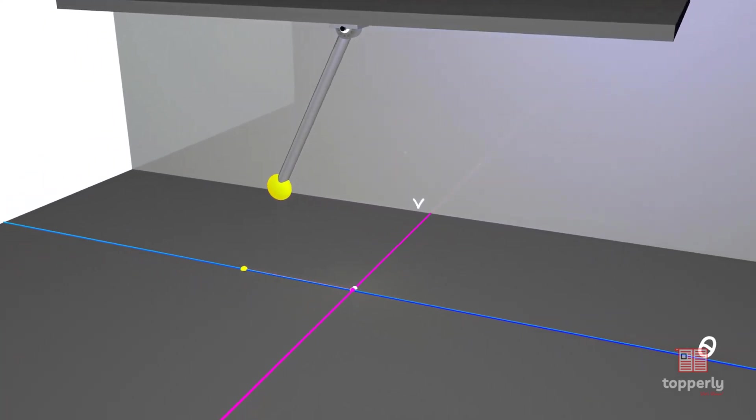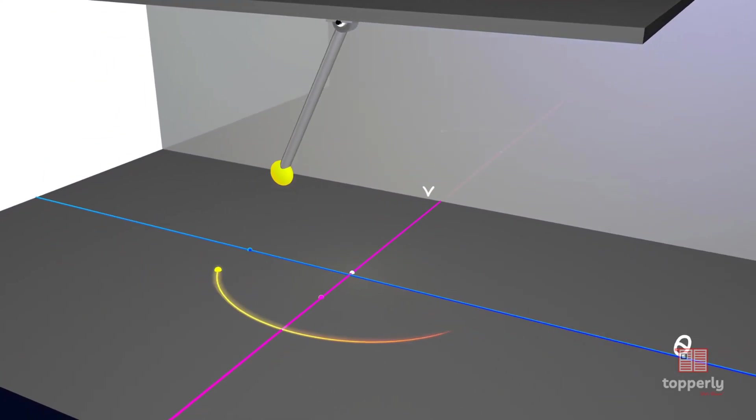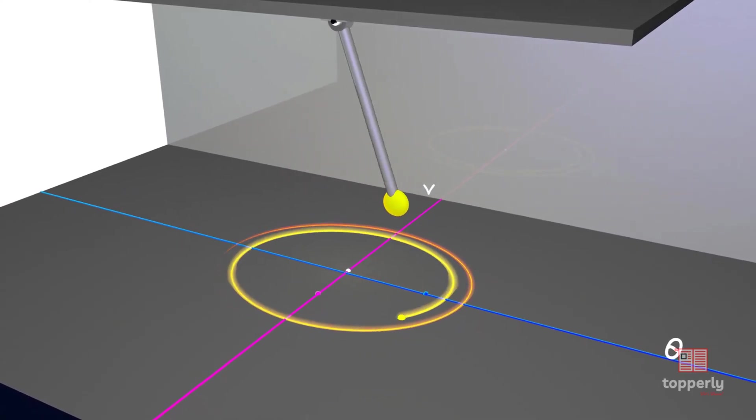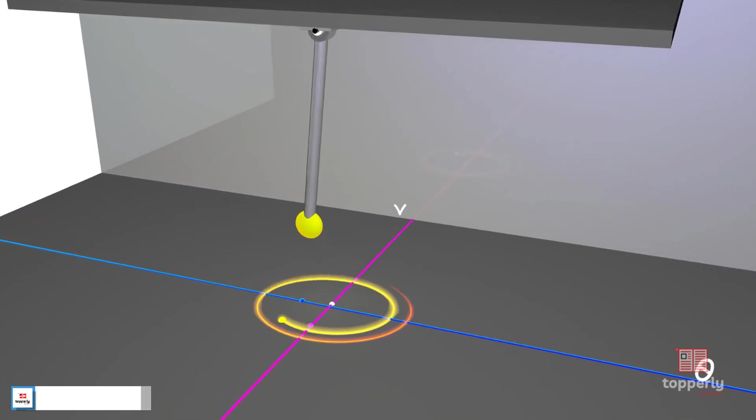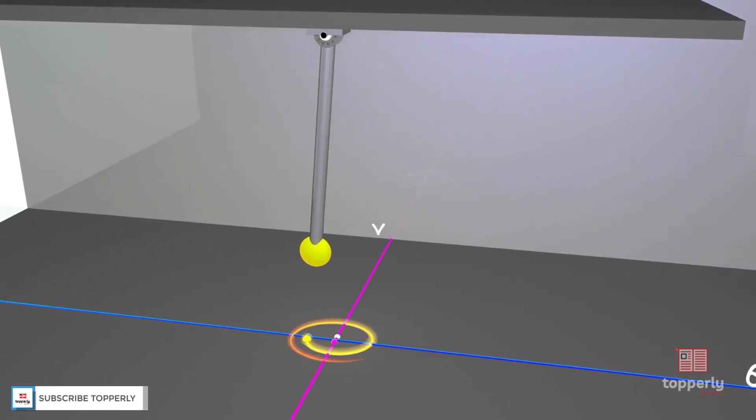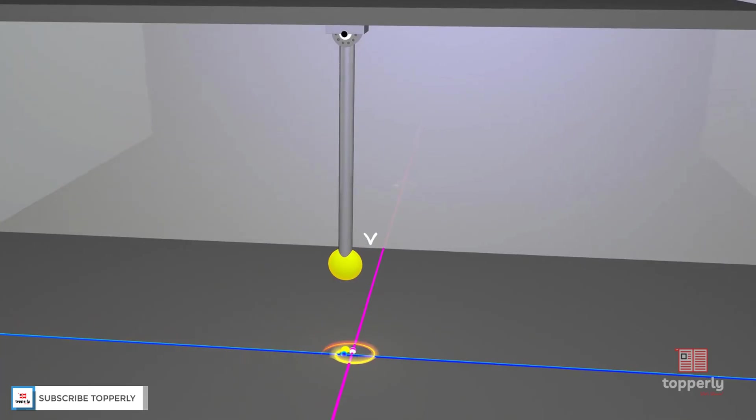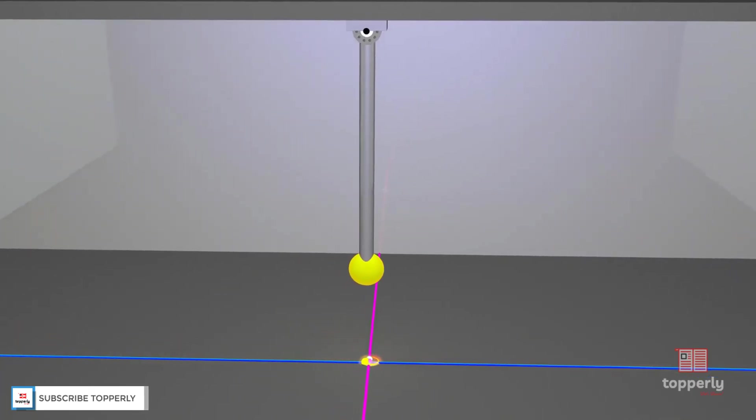No matter what the initial conditions are, if friction is present, we know that the final state of the pendulum will be at rest at origin. And in the graph, you can see that the phase trajectory is attracted towards this equilibrium point. So, this is called a stable equilibrium point.